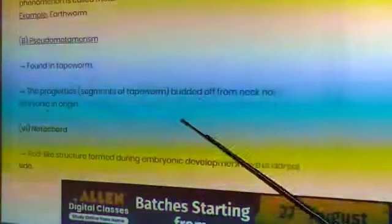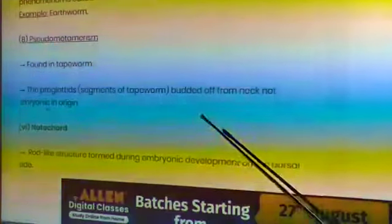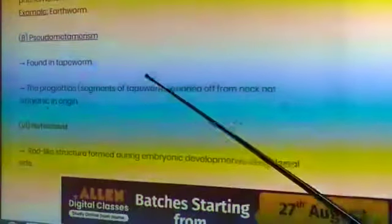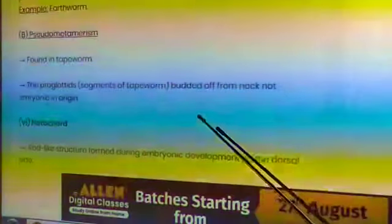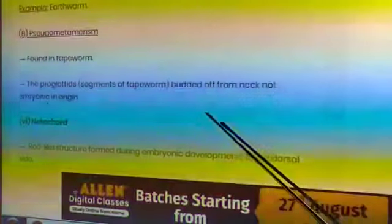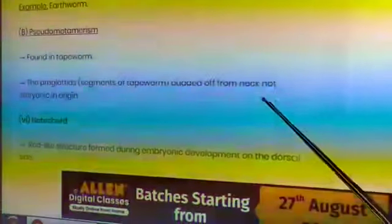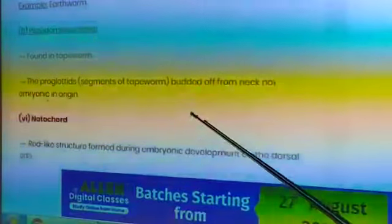Next is pseudometamerism, found in tapeworm. This is tapeworm found in platyhelminthes. Proglottids means segments of tapeworm budded off from neck, not embryonic in origin.